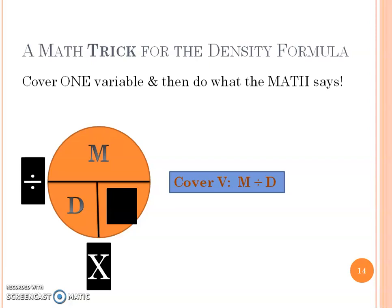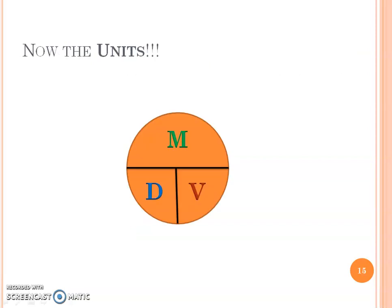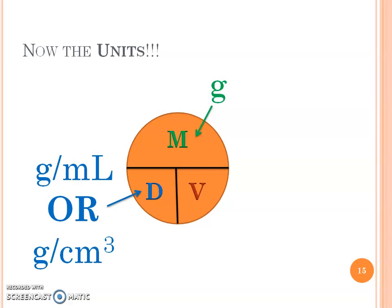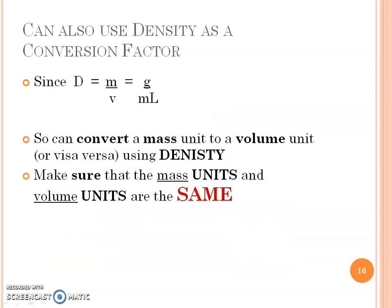I'm also going to show you the dimensional analysis way. We can use density to convert from grams to milliliters. Let's talk about the units - mass is grams, density is a mass unit per volume unit, and volume is milliliters. Density you could actually use as a conversion factor. A lot of times we're going to use density to convert from mass to volume of something or volume to mass of something.